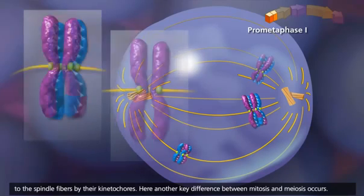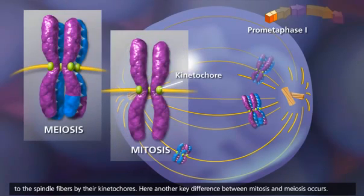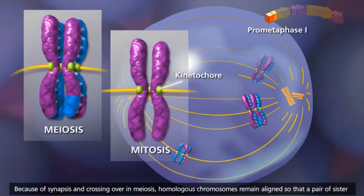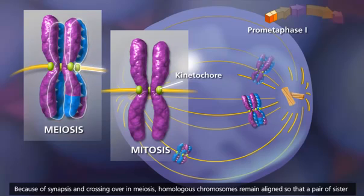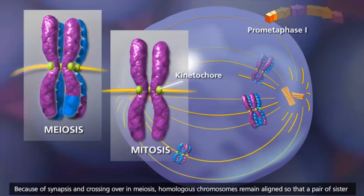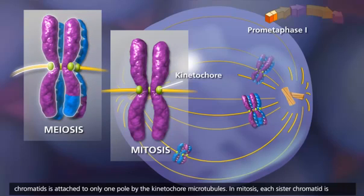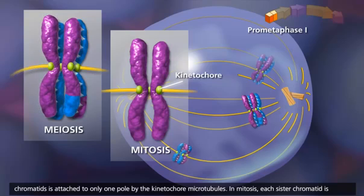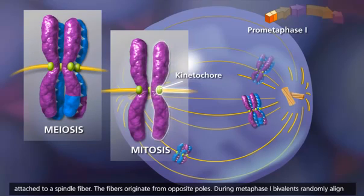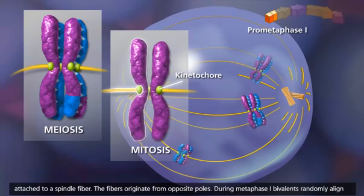Here, another key difference between mitosis and meiosis occurs. Because of synapsis and crossing over in meiosis, homologous chromosomes remain aligned, so that a pair of sister chromatids is attached to only one pole by the kinetochore microtubules. In mitosis, each sister chromatid is attached to a spindle fiber, with fibers originating from opposite poles.